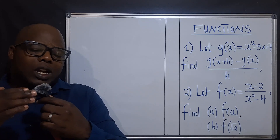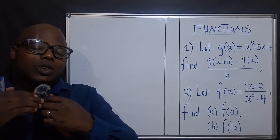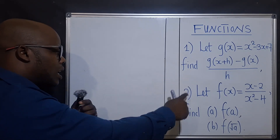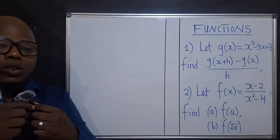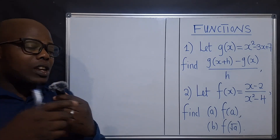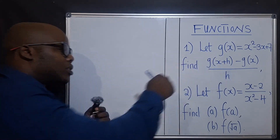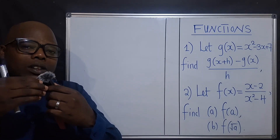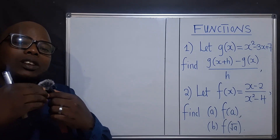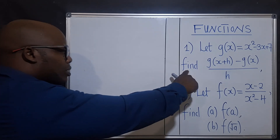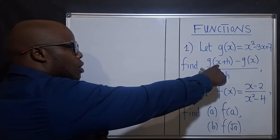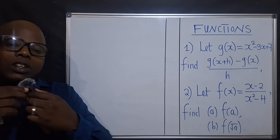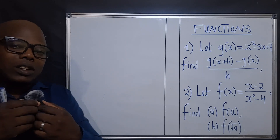Alright, so we've got two questions right here. There is question one and question two. So for question one, they're saying let g of x be equal to x squared minus 3x plus 7. And they want us to find g of x plus h minus g of x, over h.